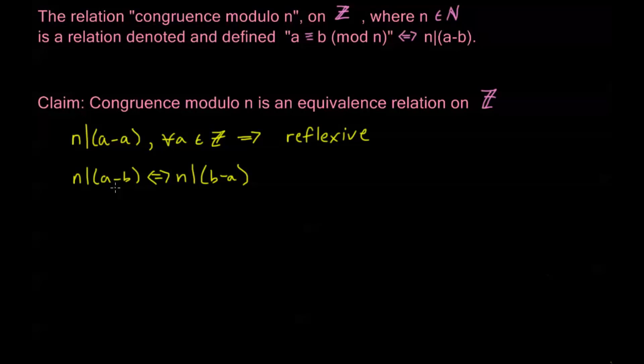So, let's say that a is 15, b is 5, and n is 2. Well, 15 minus 5 is 10, and 2 divides 10. And 5 minus 15 is just negative 10. So, if 2 divides 10, then 2 must divide negative 10 as well. Right? a minus b and b minus a are just negative values of the same number. So, this is a symmetric relation.